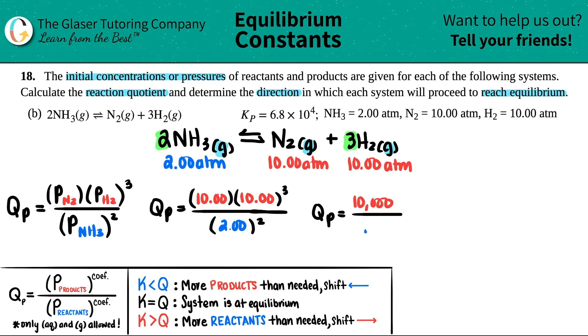Two squared is just four, so maybe I'll just say 4.00, just four. Who cares about sig figs? Q_P is 10,000 divided by four, we get 2,500.